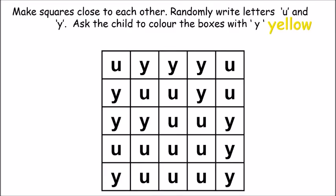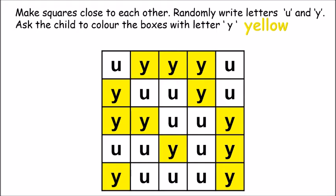Now it is time for an activity. Parents, please make squares close to each other and randomly write letters U and Y. Now ask the child to color only the boxes with letter Y with yellow color. Like this. I have colored only letter Y boxes. You can write letter U and Y in any way. This is just an example.